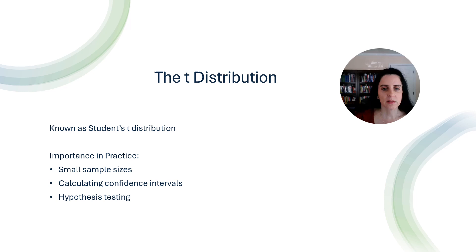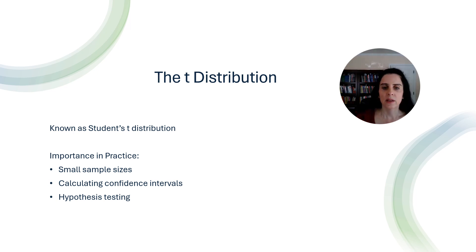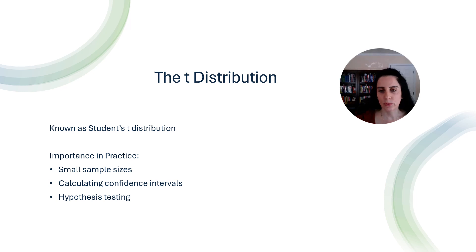In practice, especially in fields like educational research, sample sizes are often small due to practical constraints such as limited access to participants or resources. The T-distribution accounts for the increased uncertainty in estimates derived from small samples. Unlike the normal distribution, which assumes a known population standard deviation, the T-distribution uses the sample standard deviation, making it more applicable to real-world scenarios.